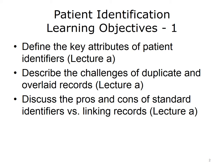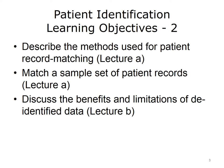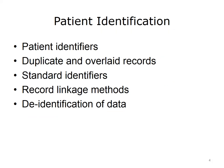The learning objectives for this unit, patient identification, are to define the key attributes of patient identifiers, describe the challenges of duplicate and overlaid records, discuss the pros and cons of standard identifiers versus linking records, describe the methods used for patient record matching, match a sample set of patient records, and discuss the benefits and limitations of de-identified data. In this lecture, we'll talk about patient identifiers, discuss duplicate and overlaid records, and explain standard identifiers and record linkage methods. In the next lecture of this unit, we'll discuss the value and limitations of the identification of data.